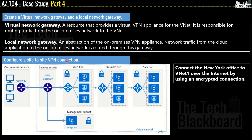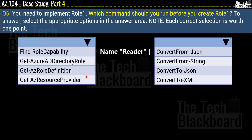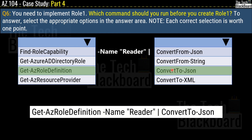Question 6, the last question: You need to implement Role1. Which command should you run before creating Role1? You must select what comes before and after a given command segment. The full command is: Get-AzRoleDefinition -Name Reader, piped to ConvertTo-Json. So the first part is Get-AzRoleDefinition, the middle part is -Name Reader, followed by the pipe symbol, and the last part is ConvertTo-Json.